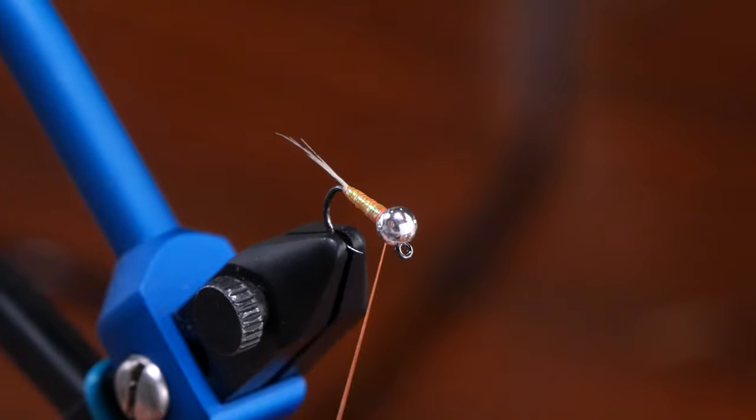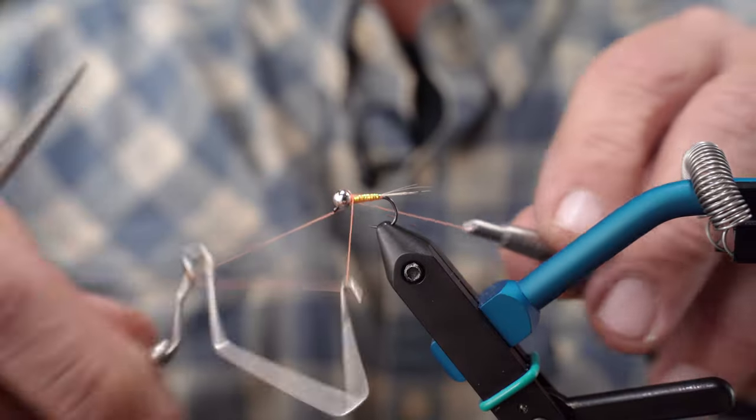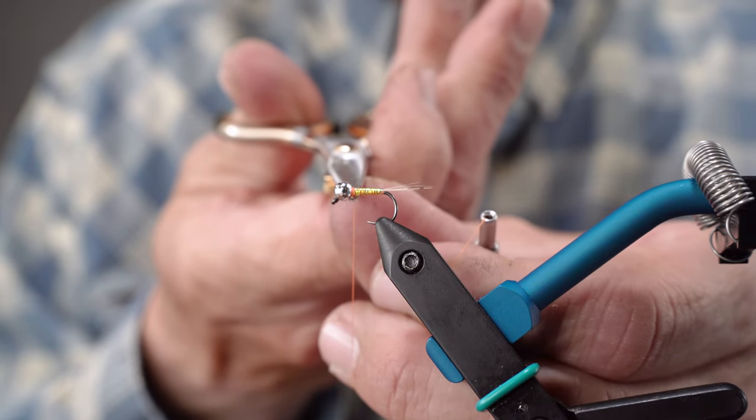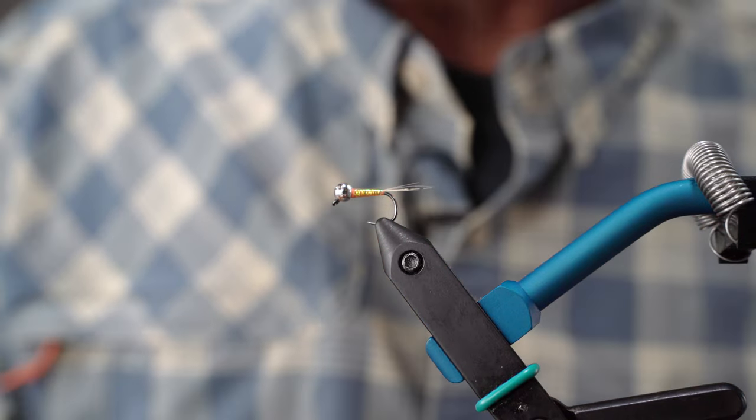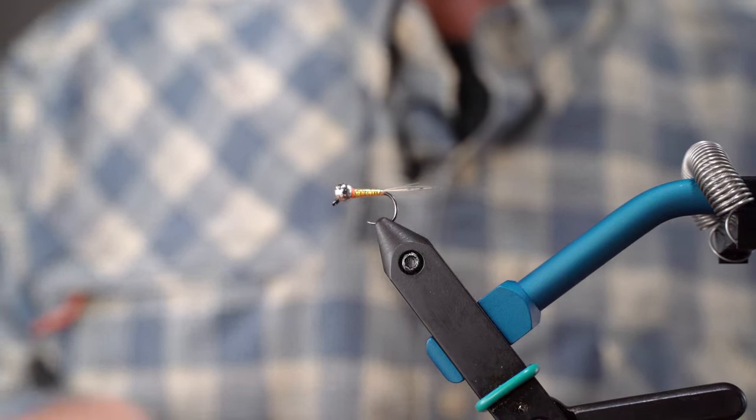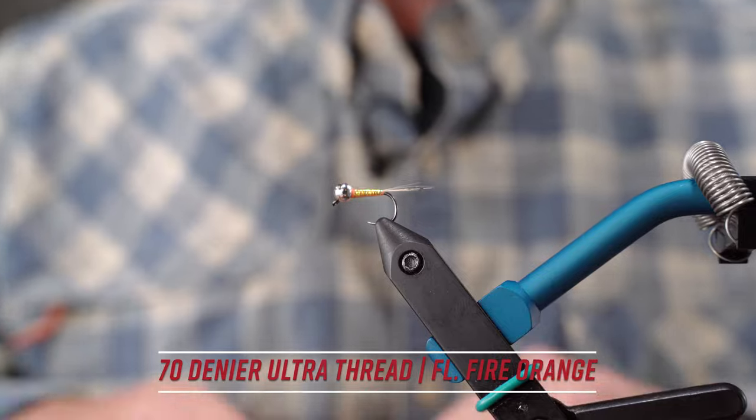We're going to be done with the fluorescent orange here. We're not going to get too excessive with our wraps. We're going to do a whip finish. I'm going to cut my thread as close as I can. Then we're going to come in with our hotspot thread, which is going to be the same UTC 70, but this time it's the fluorescent fire orange.